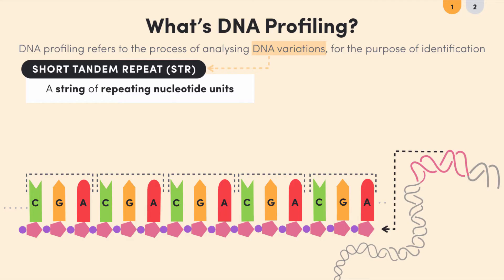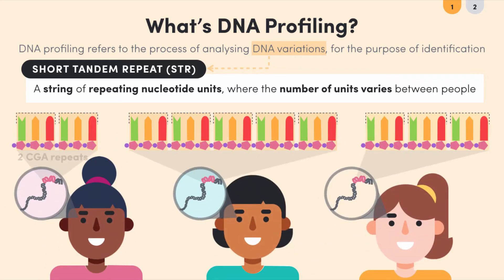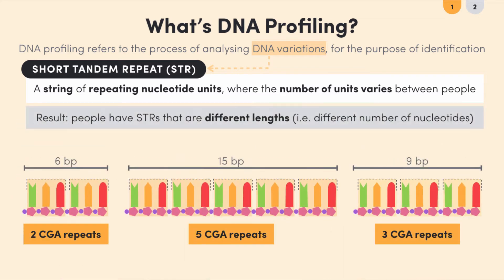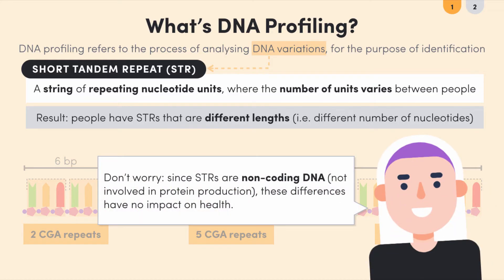The number of CGA repeats within an STR varies between different people. For example, these people have two, five, and three repeats. The result is that their STRs have different lengths in terms of number of base pairs. Since STRs are non-coding DNA, not involved in protein production, these differences have no impact on a person's health — but these differences in length are useful for making DNA profiles.